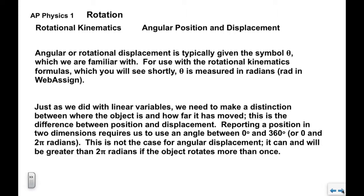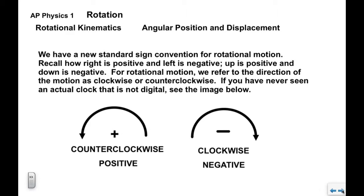We have a new sign convention for rotational motion. You may recall that in linear kinematics, right is positive and left is negative. For rotational motion, we refer to the direction as clockwise or counterclockwise. Counterclockwise is positive; clockwise is negative. This applies to all the familiar vector quantities from linear kinematics when transferred to a rotational context.